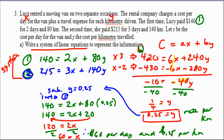Therefore, the daily rate is $60 and the per-kilometer rate is $0.25. That's solving linear systems by elimination. Some people like substitution more and some like elimination more — you're going to have to decide that for yourself. Thanks for watching.